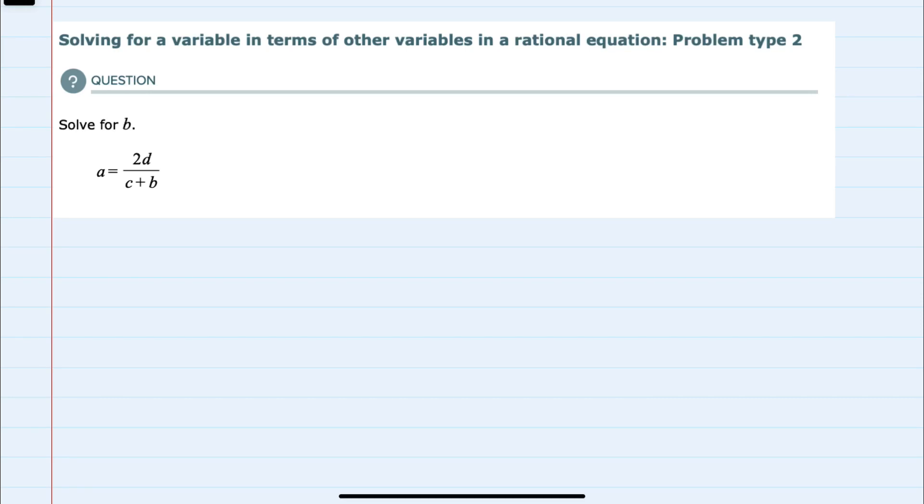In this video, I'll be helping you with the ALEKS problem type called solving for a variable in terms of other variables in a rational equation, problem type 2. From this equation, we're asked to solve for b.